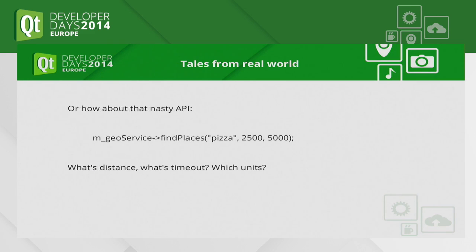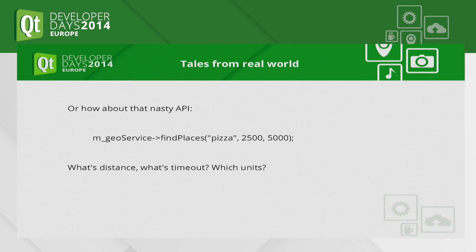Or something that was really nasty: we had some geographic API, and I constantly messed up what parameters to pass there. Is the first one the distance in which to arrange, and within which range to search, or is it the second one? Is the time two and a half seconds, or is it five seconds? Do I search in a range of 200 meters, or maybe the entire range of Europe? I don't know. That's actually the real example that got me to this talk.